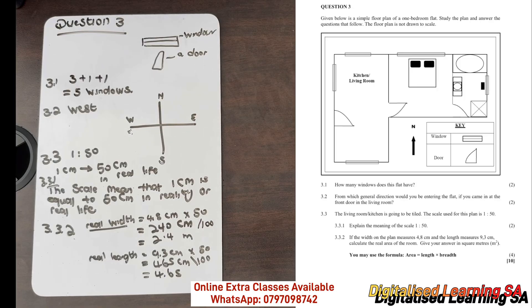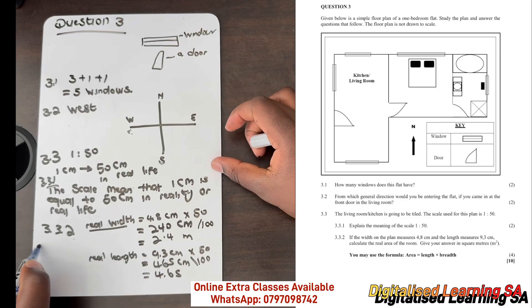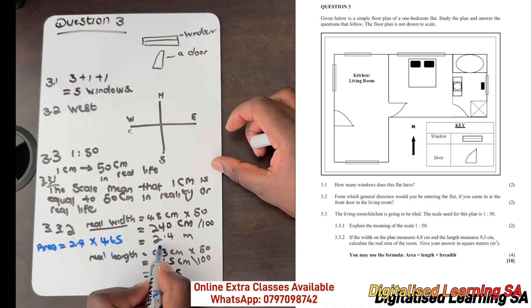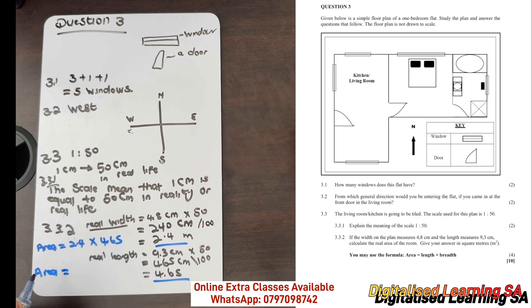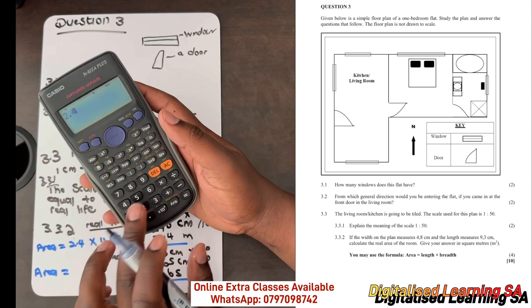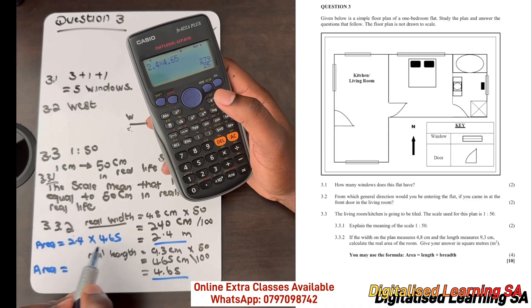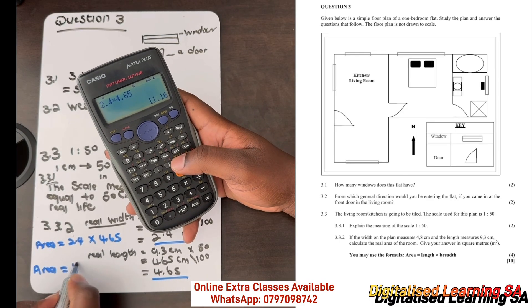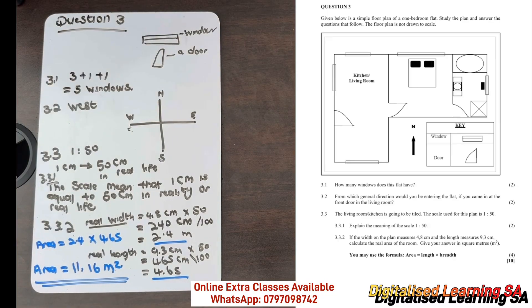Now we need to calculate the area. The formula for area is length multiplied by breadth — breadth and width are the same thing and can be used interchangeably. So our area will be 2.4 multiplied by 4.65. Plugging that into the calculator, our area equals 11.16 meters squared. That is our final answer for question 3.